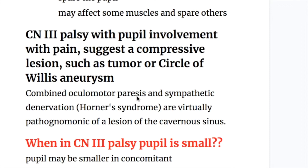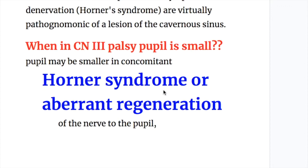Combined oculomotor paresis and sympathetic denervation, i.e., Horner syndrome, are virtually pathognomonic of a lesion of the cavernous sinus. In oculomotor palsy, the pupil is usually larger, but when there is a concomitant Horner syndrome, the pupil becomes small and miotic rather than dilated, because Horner syndrome causes a small, miotic pupil.